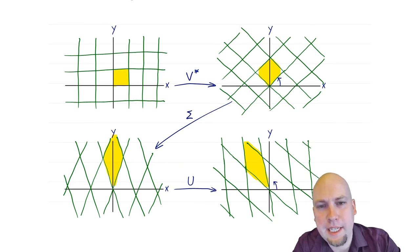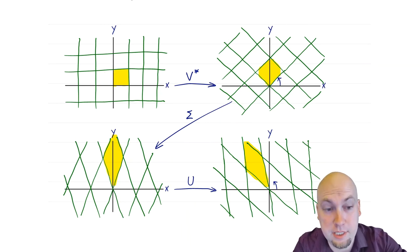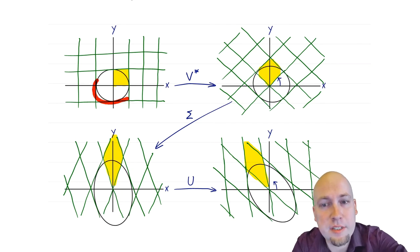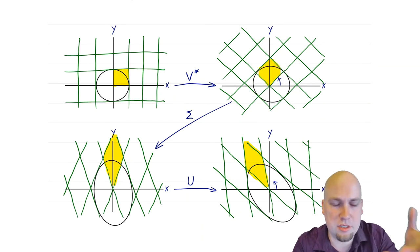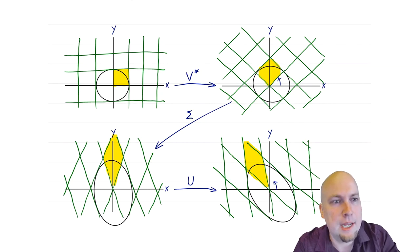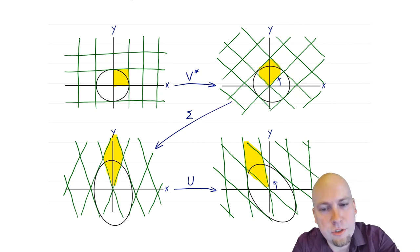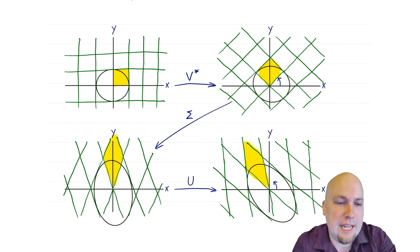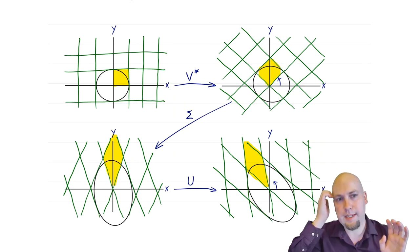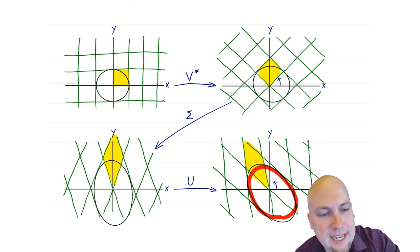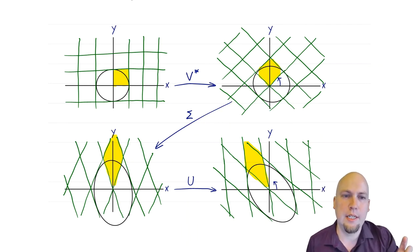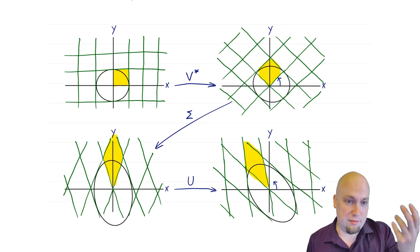Now I'm going to highlight what happens to the unit circle on the input space — the circle centered at the origin with radius one. After the rotation step, nothing happens to it: the first rotation turns the circle but it's still a circle with radius one centered at the origin. But then something does happen when we do this diagonal stretch — the circle gets stretched into an ellipse. And then in the last step, that ellipse just gets rotated. The radii of this ellipse are determined by the diagonal stretch: we stretch in one direction by sigma_1 (the largest singular value) and in another direction by sigma_2 (the second largest singular value).